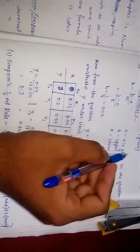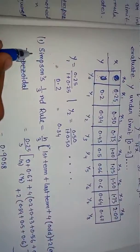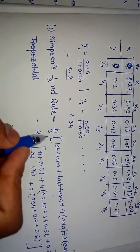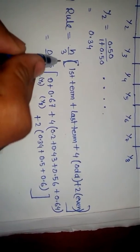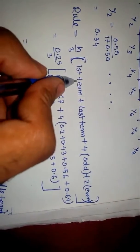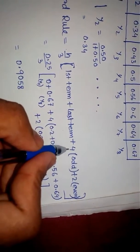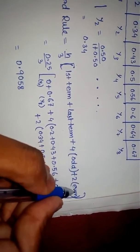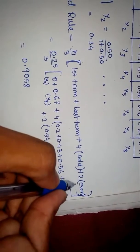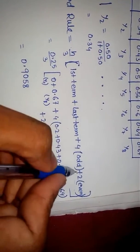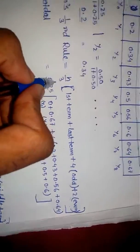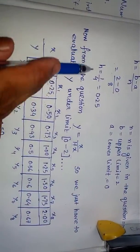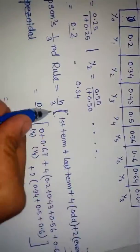In the question, it was given Simpson's 1/3 rule or trapezoidal rule. First, we take Simpson's 1/3 rule. Simpson's 1/3 rule formula says: (h/3) times [first term plus last term plus 4 times odd terms plus 2 times even terms]. You have to remember this formula very clearly.